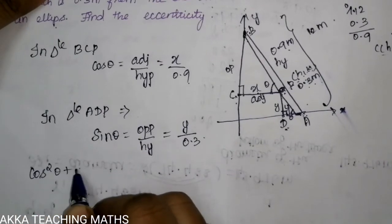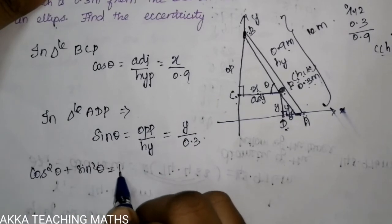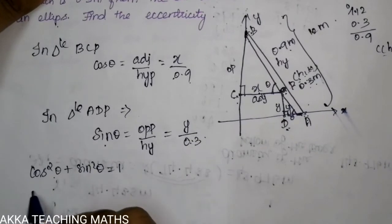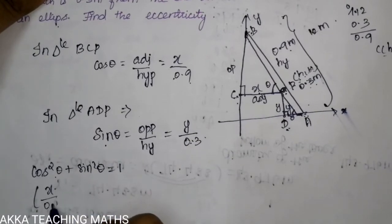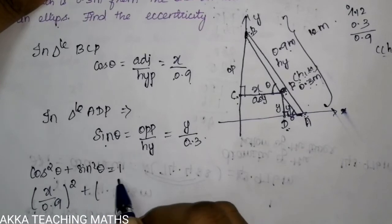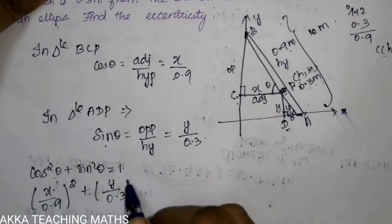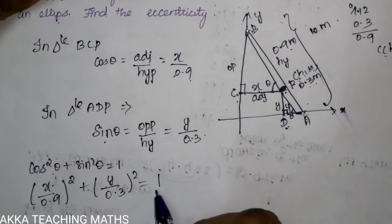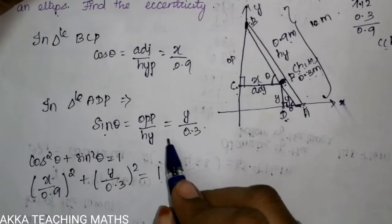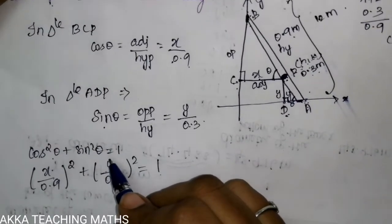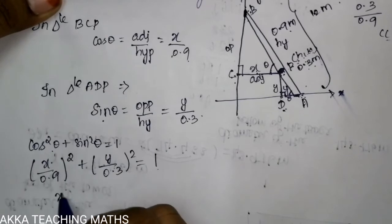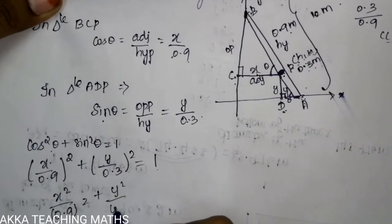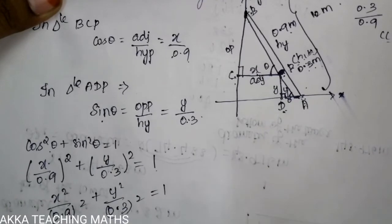Using the identity cos²θ + sin²θ = 1, we substitute: cos theta equals x divided by 0.9, and sin theta equals y divided by 0.3. So the ellipse equation becomes: x² divided by 0.9² plus y² divided by 0.3² equals 1.